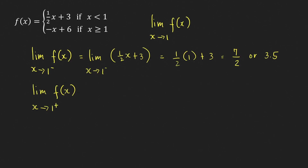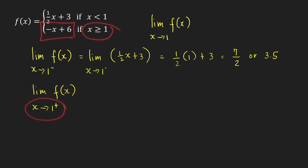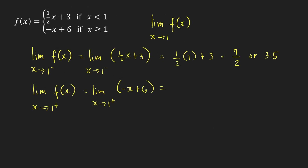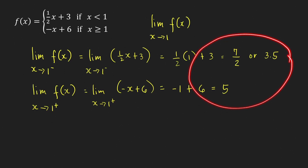Now let's compute the right-hand limit — the limit of f of x as x approaches 1 from the right. When we approach 1 from the right, the values of x are greater than 1, so we use the formula for f of x on that side. This gives us the limit as x approaches 1 from the right of −x + 6, which equals −1 + 6 = 5.